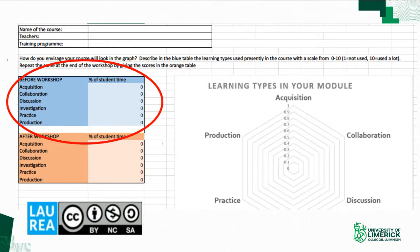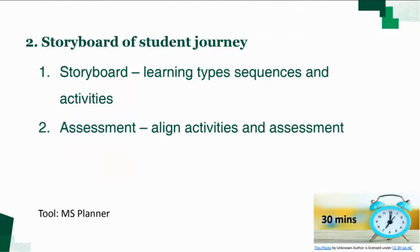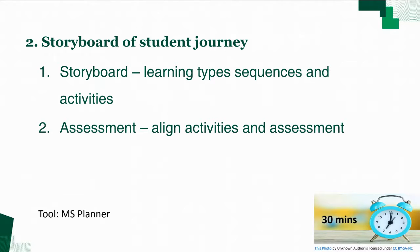You pop in a number from zero to 100 for each learning type, and as you do that a shape starts to emerge — that is the current module shape. Sometimes reflection follows: people say there's too much acquisition and it doesn't align with the learning outcomes, so we want to invest more in collaboration or discussion. Then we spend time storyboarding the new design, designing weeks one and two and aligning some assessment activities.